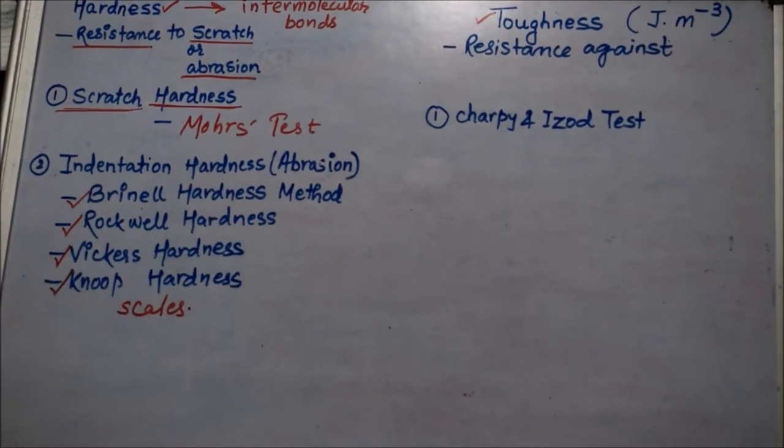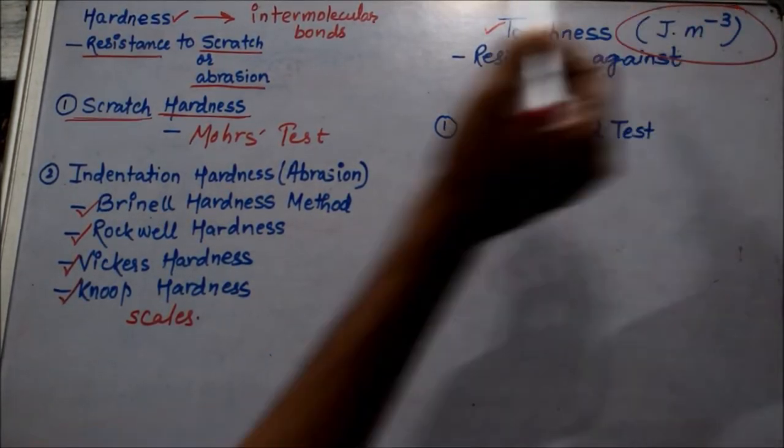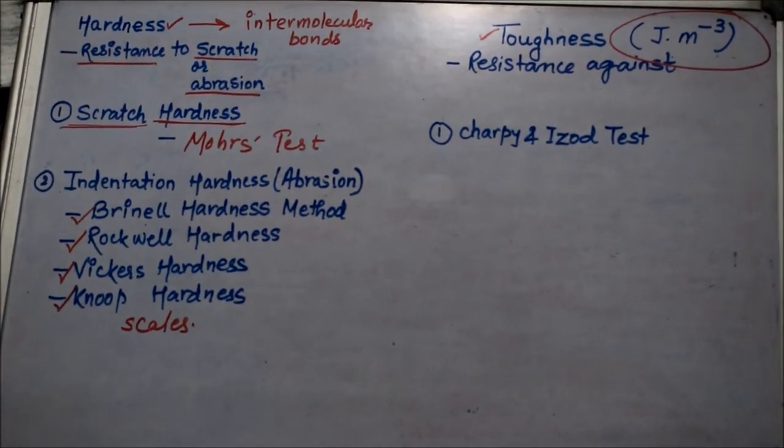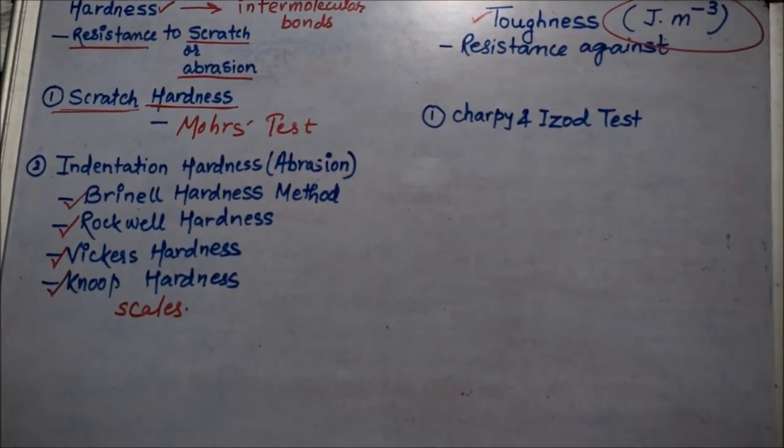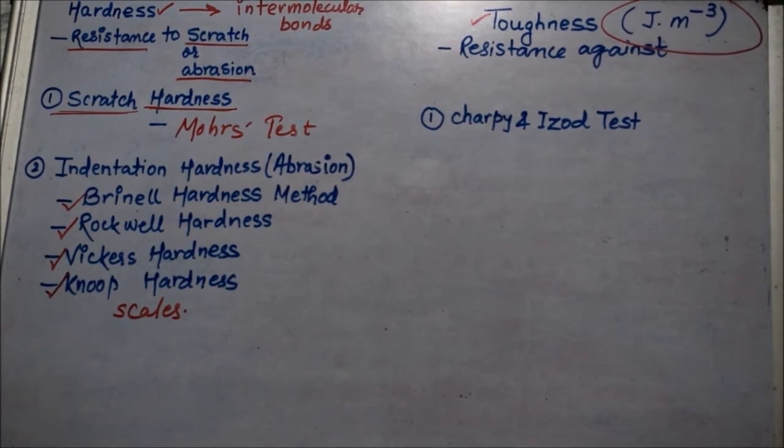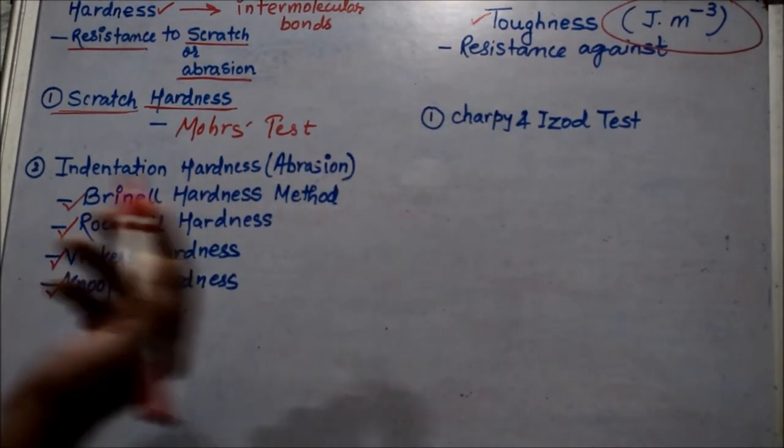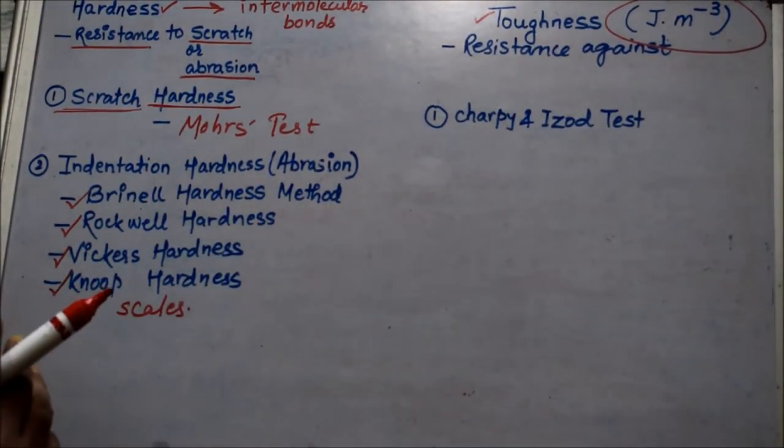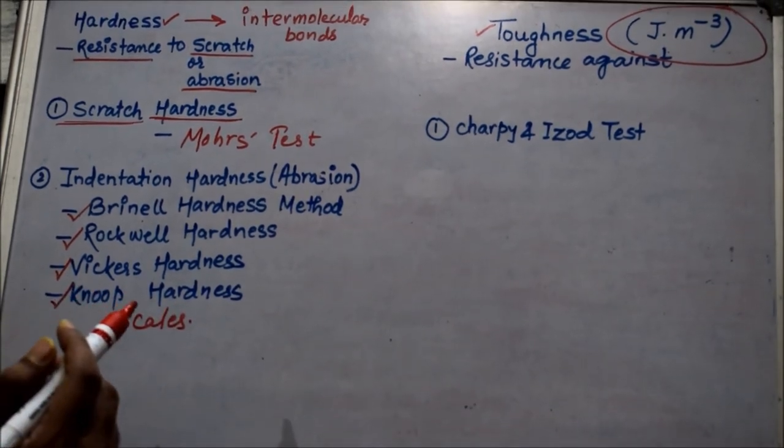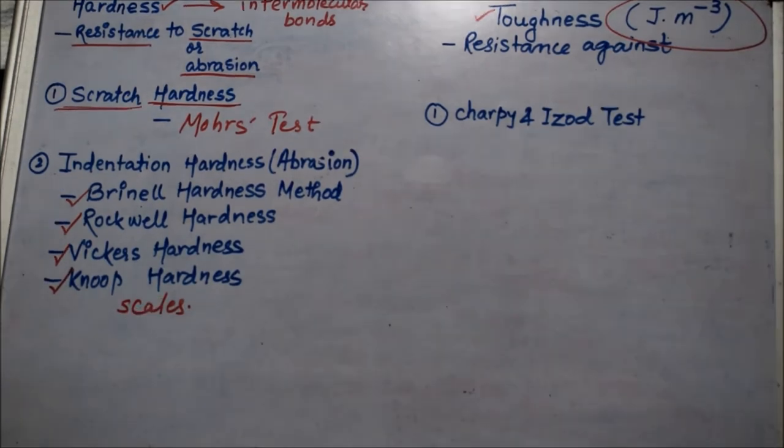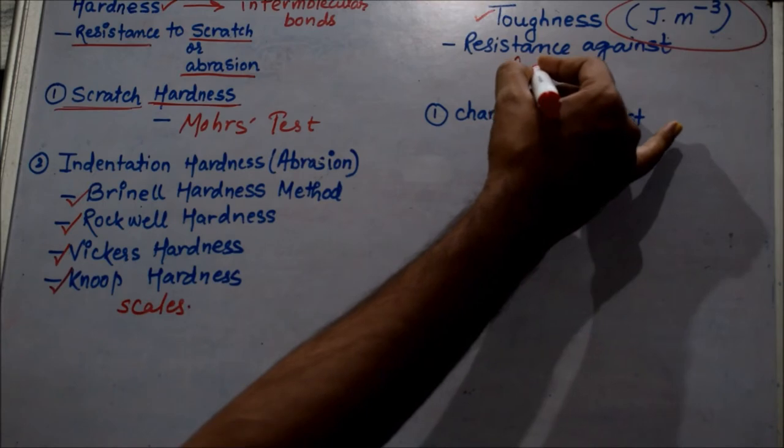Now, coming back to toughness, I would like to bring to your notice this unit that I have written: joule per cubic meter. Often this question is asked in exams: what is the SI unit for toughness, and what exactly is toughness? So let us start with this SI unit. Joule will be representing obviously the energy, and cubic meter is representing the volume. So I can say resistance against fracture.